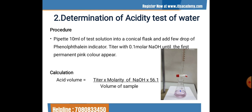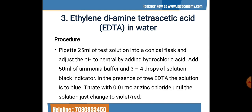The calculation formula is: Acidity = titer × molarity of NaOH × 56.1 / volume of sample. Whatever quantity of 0.1 molar NaOH was used to completely neutralize the sample is noted down. We put 0.1 for molarity of NaOH, multiply by 56.1, and divide by 10 ml (the sample volume). On calculation, we get the amount of acid present in the sample.